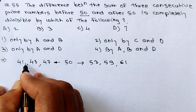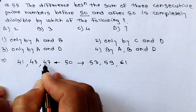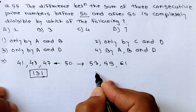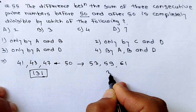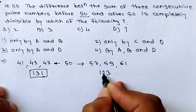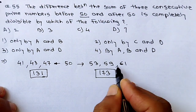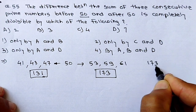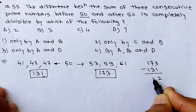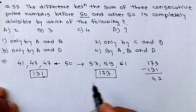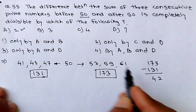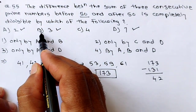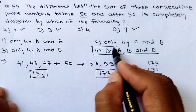Addition of the 3 prime numbers before 50: 41 + 43 + 47 = 131. Addition of the 3 prime numbers after 50: 53 + 59 + 61 = 173. Subtraction: 173 − 131 = 42. Now, 42 is divisible by 2, also divisible by 3, not divisible by 4, but divisible by 7. So options A, B, and D are correct — option 4 is our correct answer.